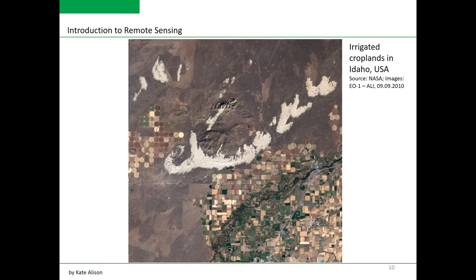My last example shows how we can use remote sensing in agricultural applications. This image is from NASA's EO-1 ALI sensor, captured on the 9th of September 2010. In this picture we can see intensive irrigated fields with circular shapes, as well as other cropland areas along the Snake River in the USA. This image could be used to create an agricultural crop map showing different crop types or crop intensity usage within the area.